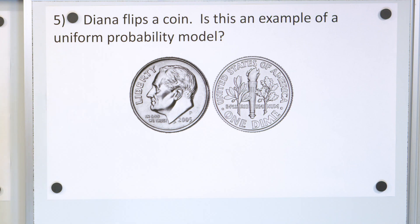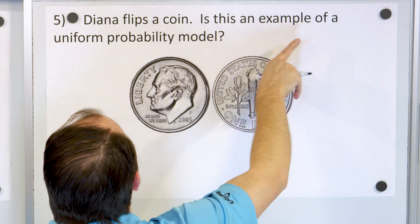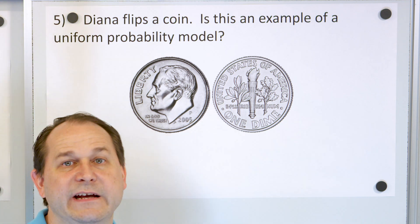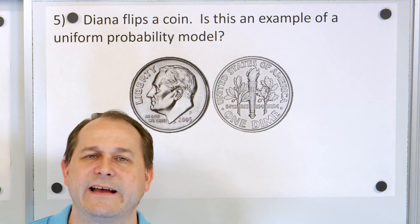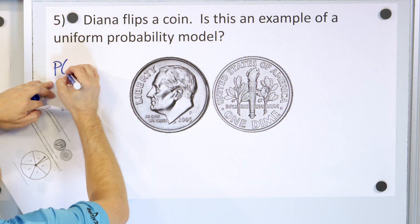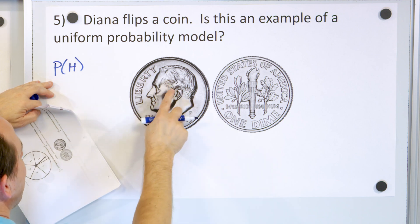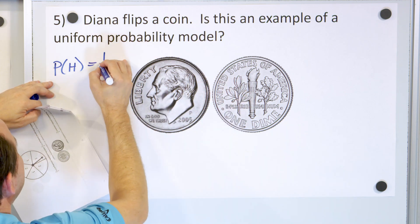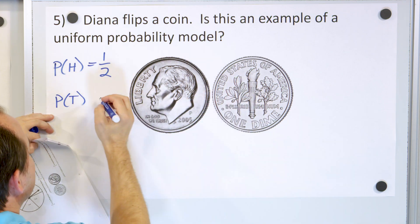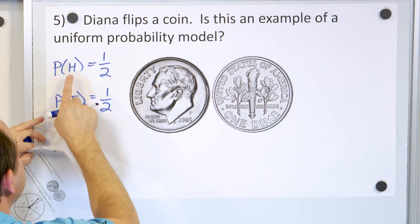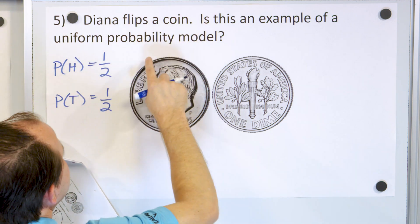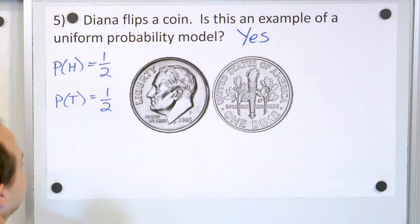Problem 5: Diana flips a coin. Is this an example of a Uniform Probability Model? The probability of landing on heads is one outcome out of two possible outcomes — one half. The probability of landing on tails is also one out of two — one half. The probability of heads and tails is the same, so yes, this is an example of a Uniform Probability Model.